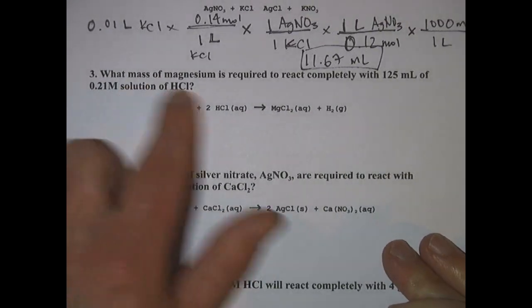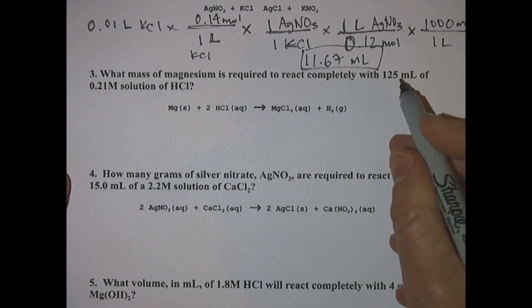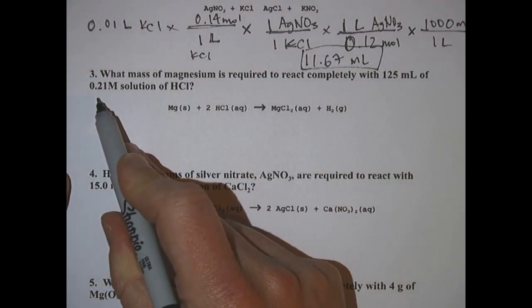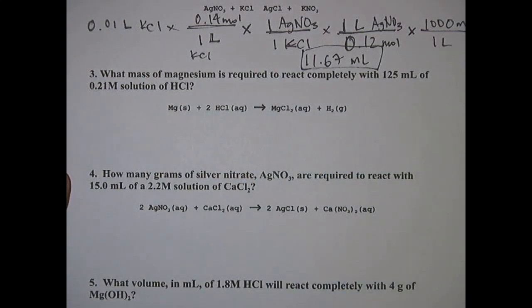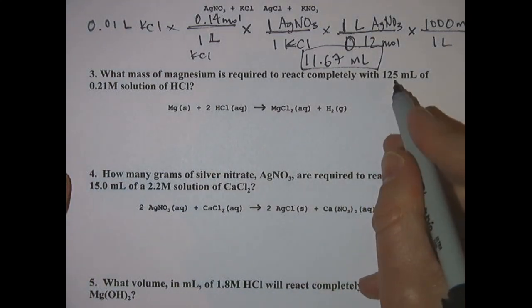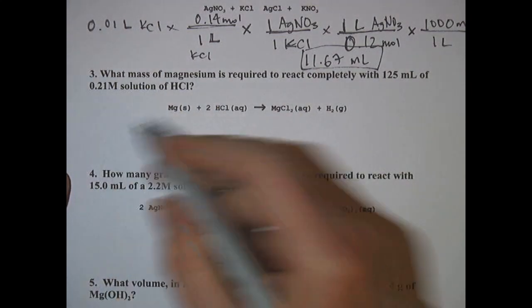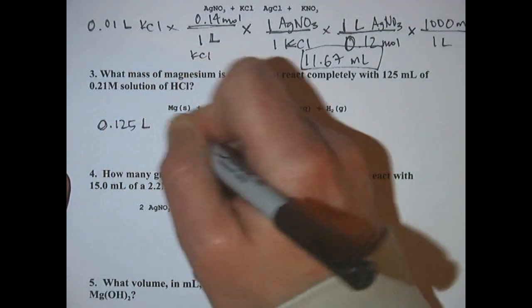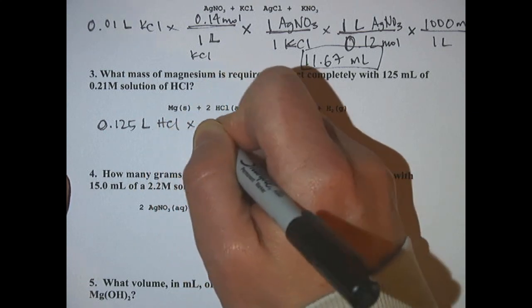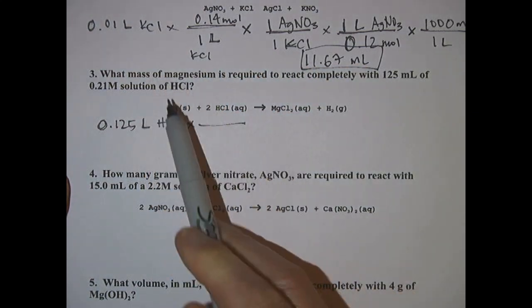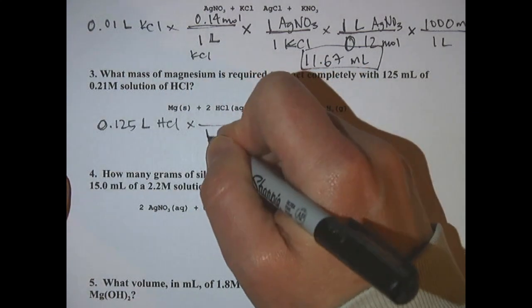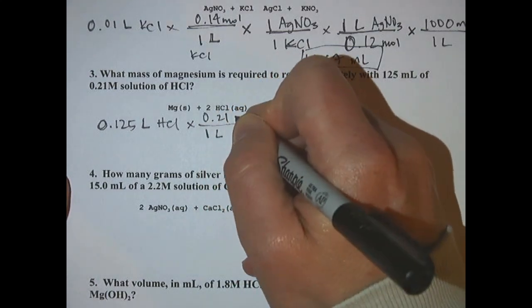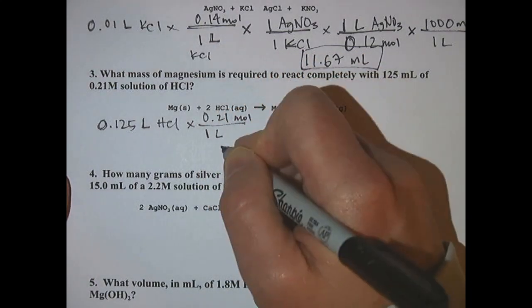Number three: what mass of magnesium is required to react completely with 125 milliliters of 0.21 molar solution of hydrochloric acid. This one is like number one, we're going to start with milliliters and end with mass. So your 125 milliliters is 0.125 liters of HCl, and the molarity of the HCl is 0.21 molar, so one liter will get you 0.21 moles.